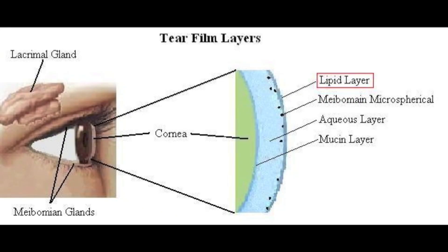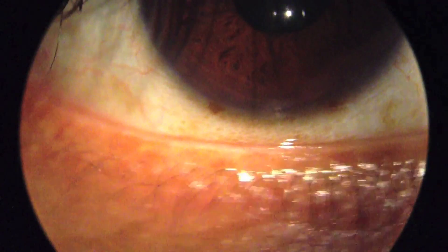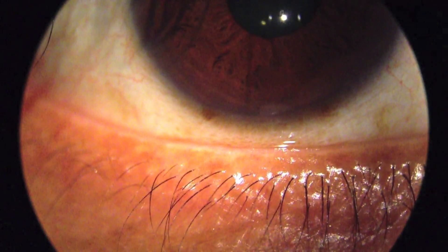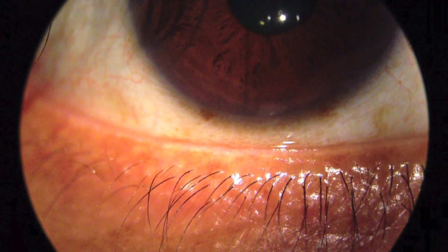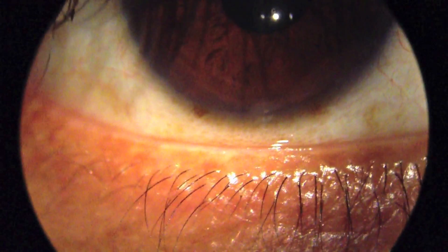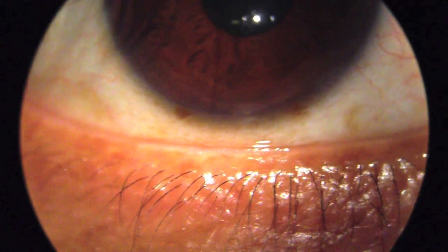The most superficial or outer layer of the tear film is the lipid or oil layer and is produced by the meibomian glands in both the upper and lower eyelids. This layer is extremely important in helping to stabilize the tear film and prevents evaporation of the lower layers. The meibomian glands run most of the way across the entire lid and there are up to 100 total between the upper and lower lid of each eye.